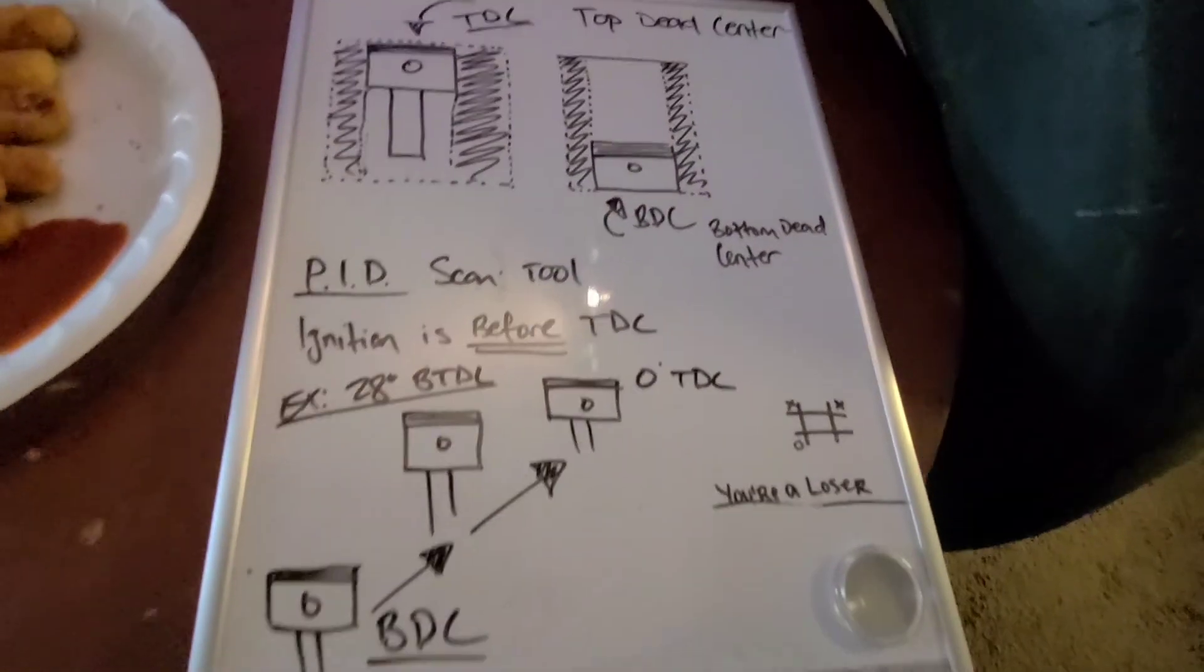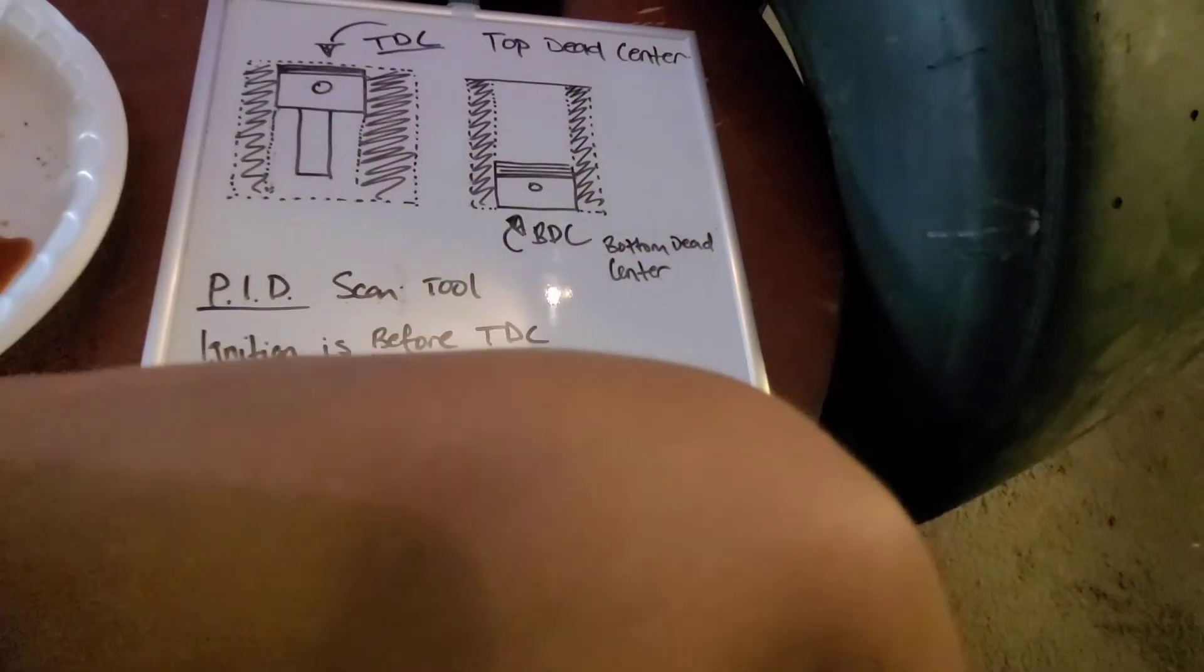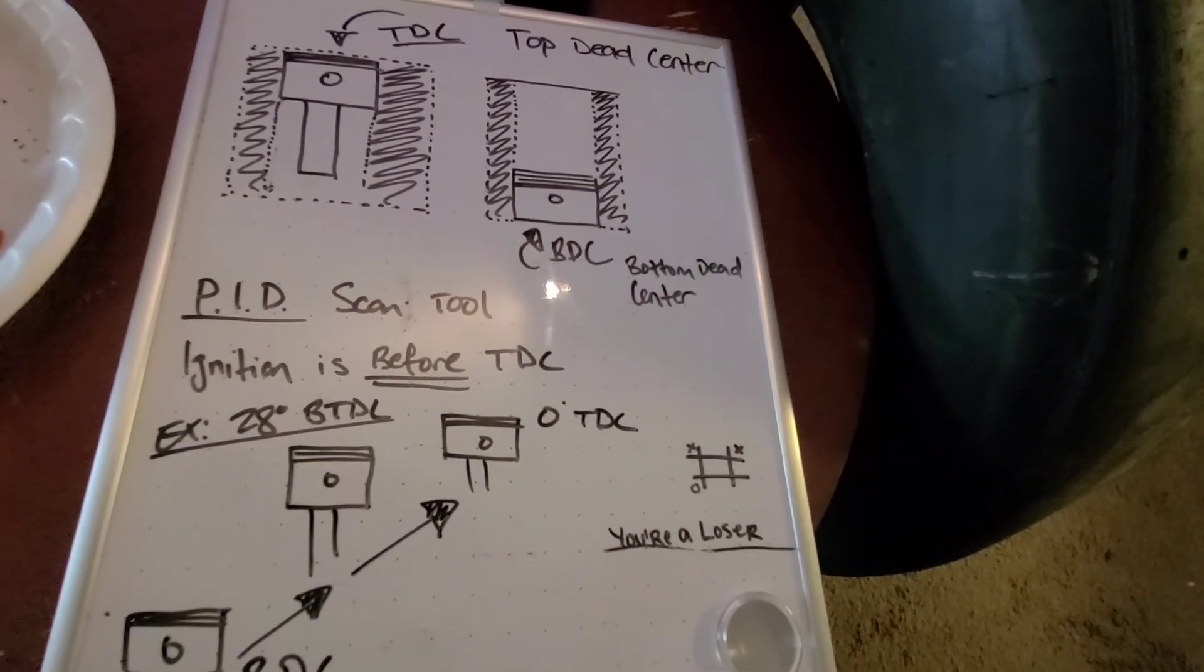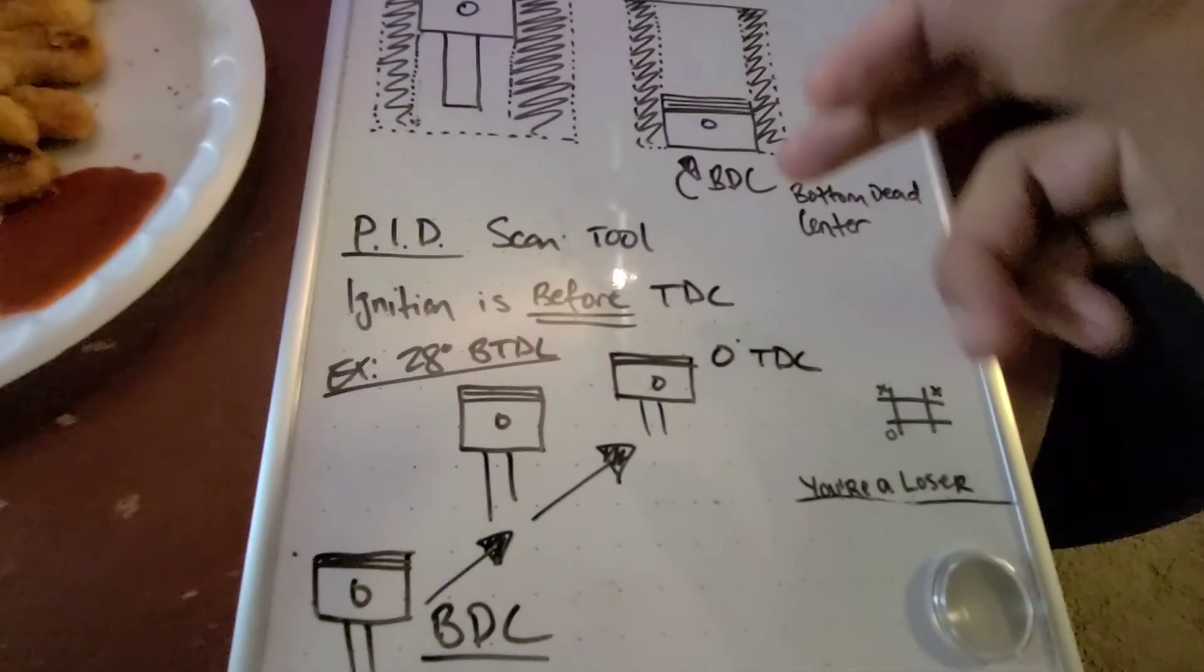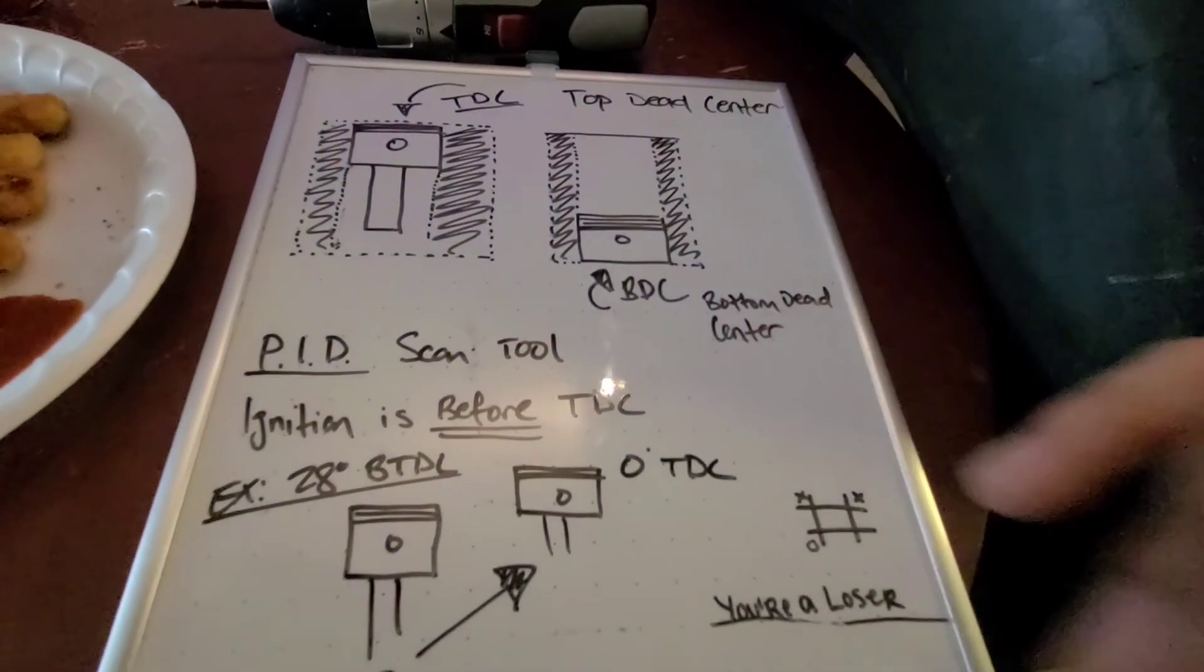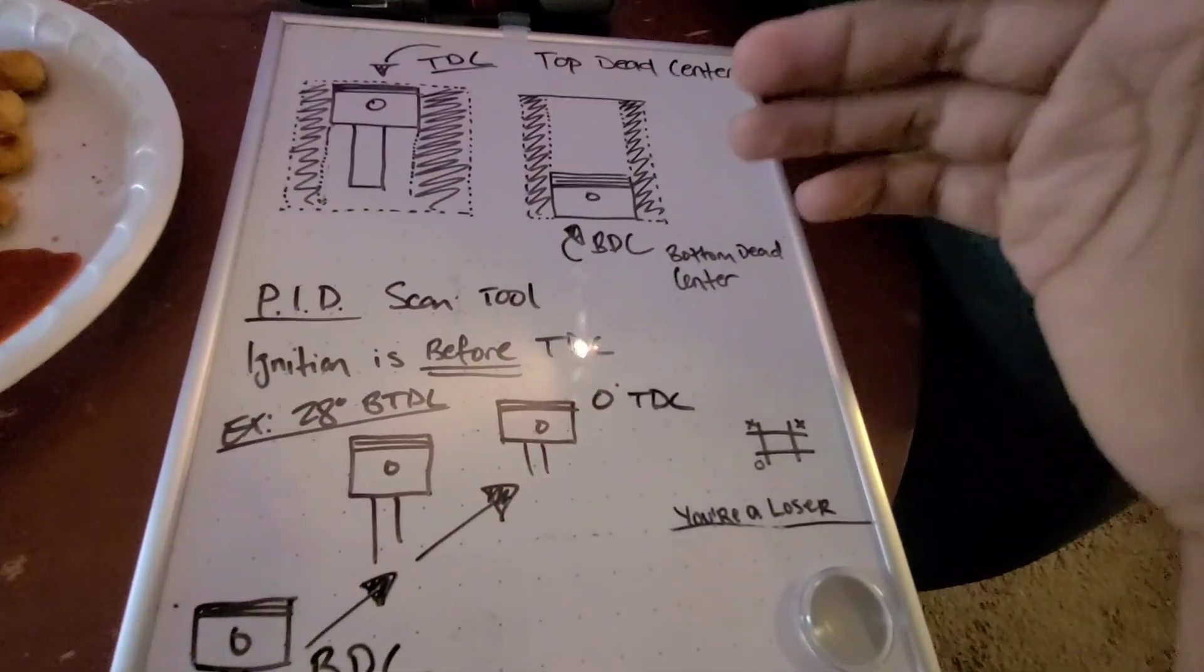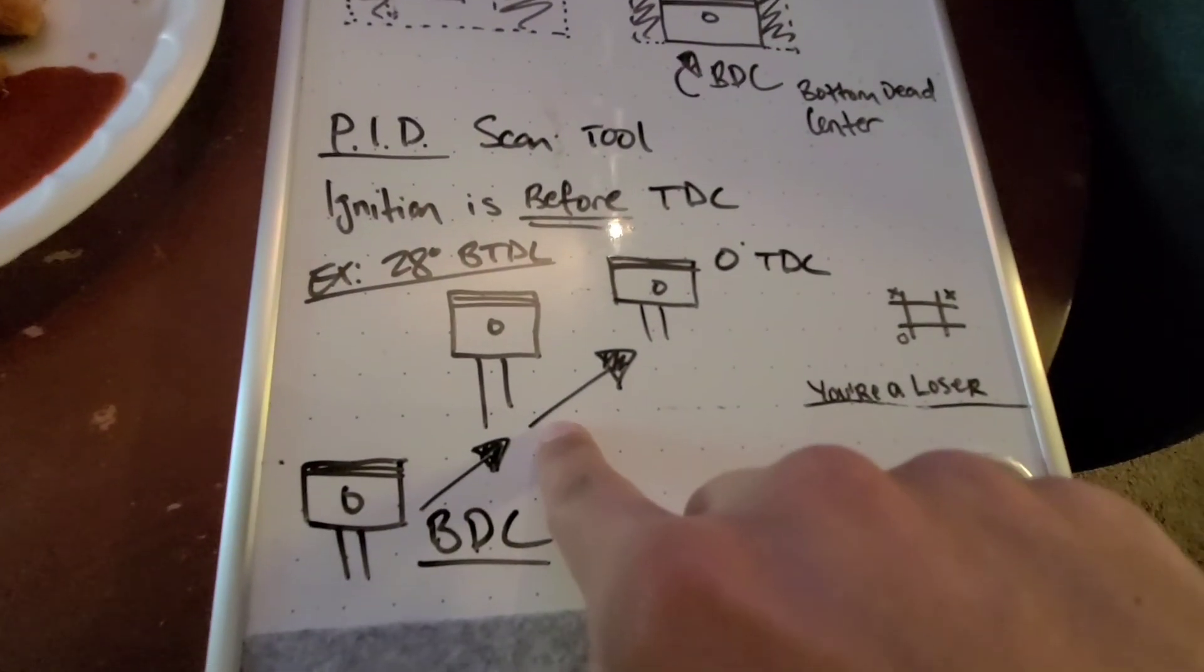Now you can look at this stuff even with an OEM car. You can have your regular daily, your Sentra, your Saturn wagon, your Honda Civic, whatever, and you can look in your scan tool and see spark advance. Now when people talk about timing, when they talk about running 20 degrees of timing, 18 degrees of timing, 32 degrees of timing, they're referring to ignition timing before top dead center.